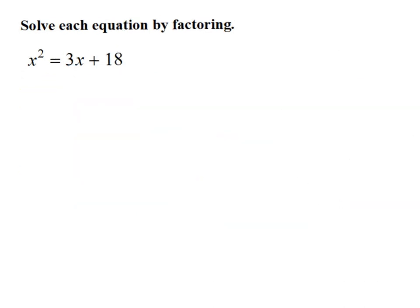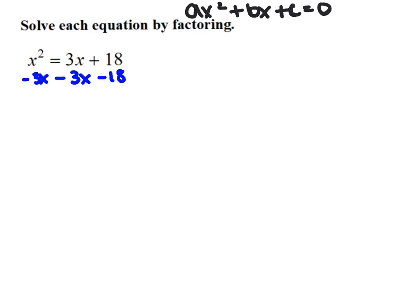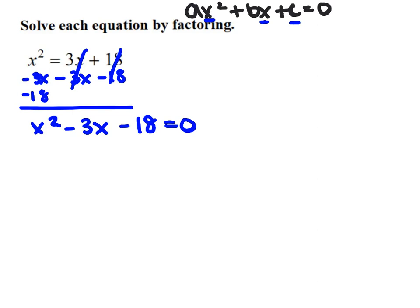In our last example, the equation isn't in standard form because x squared is by itself. To convert it to ax squared plus bx plus c format, we subtract 3x and subtract 18 from both sides so those terms cancel. Rewriting in order: x squared first, then minus 3x, then minus 18, giving us x squared minus 3x minus 18 equals zero.